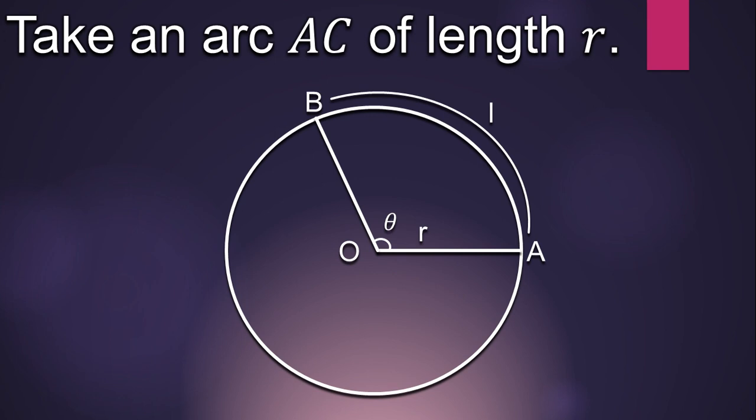Now take another arc AC of the same length as the radius of the circle. We are doing this because we want to use a geometrical theorem which we will discuss in a little while.